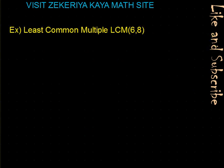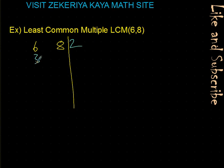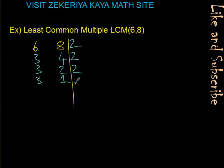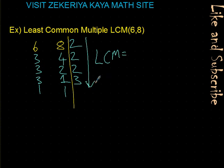Let's do an example: least common multiple of 6 and 8. You can pause and try. 6 divided by 2 is 3, 8 divided by 2 is 4. Continue with 2: 3 divided by 2 — we cannot, 4 divided by 2 is 2. Continue with 2: 3 divided by 2 — we cannot, 2 divided by 2 is 1. Now finish with 3: 3 divided by 3 is 1. The least common multiple is the product of all prime divisors: 2 times 2 times 2 times 3 equals 24.